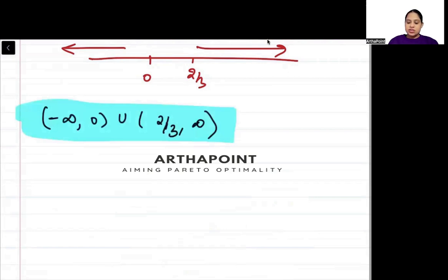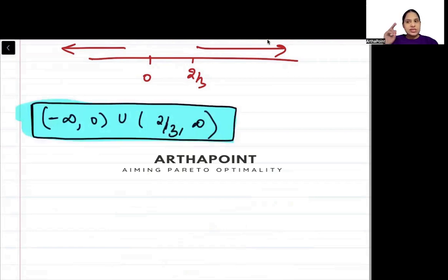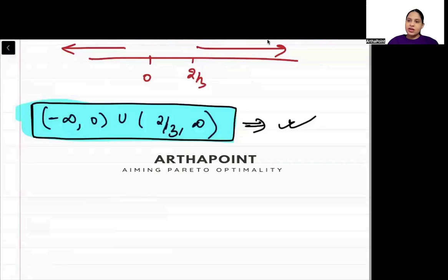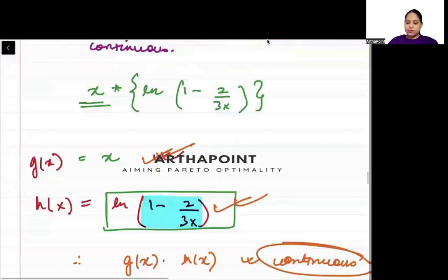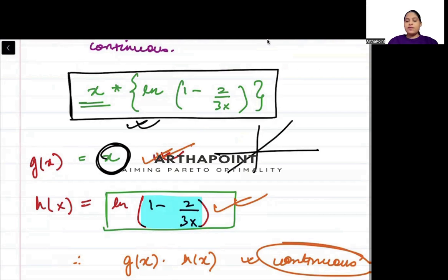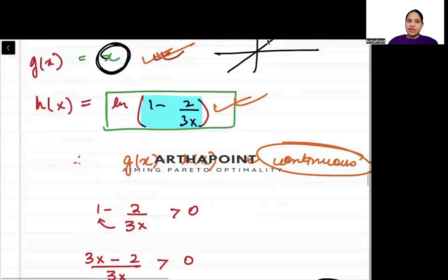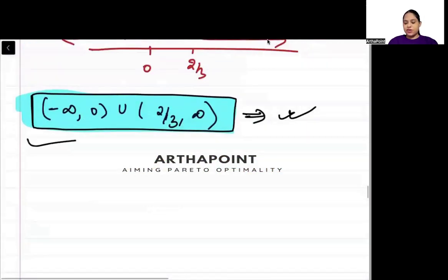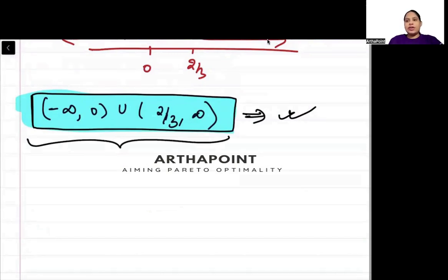So the domain of this function is (-∞, 0) ∪ (2/3, ∞). In its domain, the log function is continuous, and x (the line y = x) is continuous throughout. So their product is continuous in this domain. That is how you find where the function is continuous.